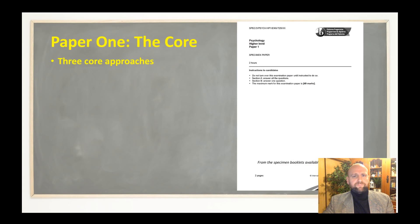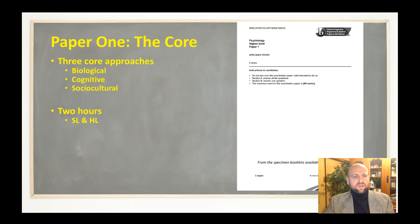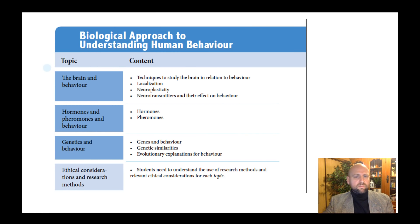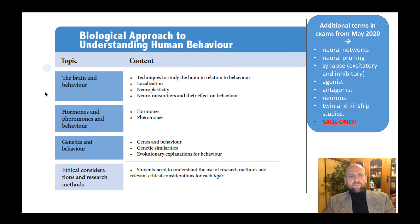Paper One is based on the three approaches: biological, cognitive, and social-cultural — which you would have been studying throughout your course. It's two hours and there are two sections: short answer questions in Section A and essays in Section B. The core approaches cover the topics and content that come straight from the IB, and these terms form the basis of the questions. If you're sitting exams from May 2020 onwards, you may also see additional terms.